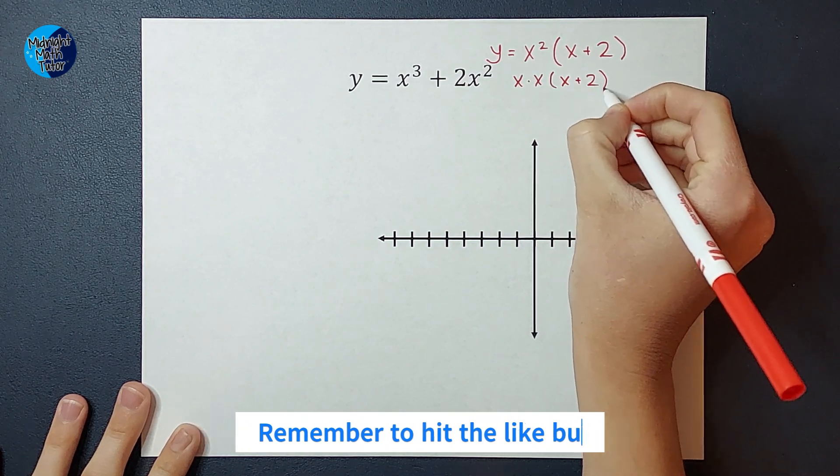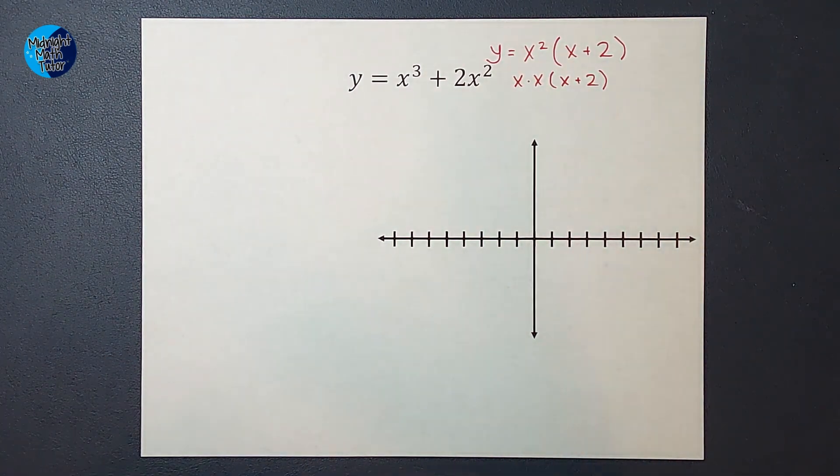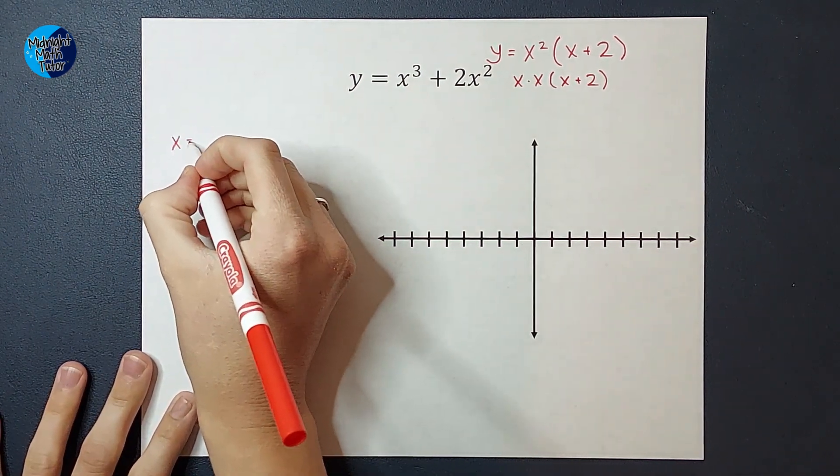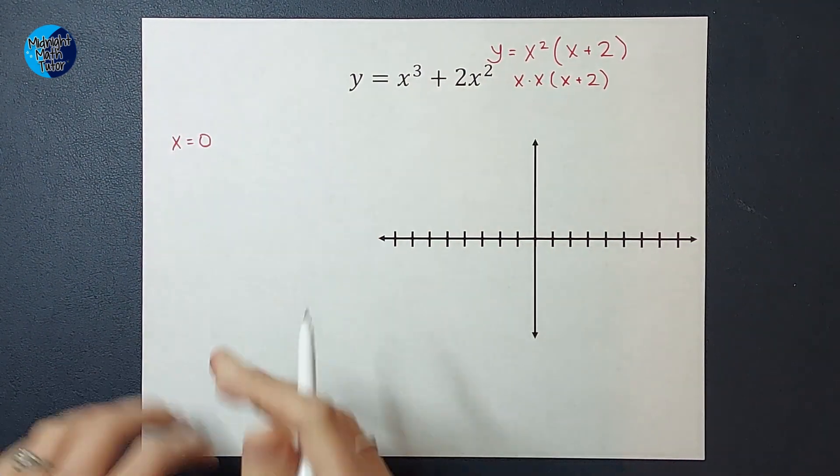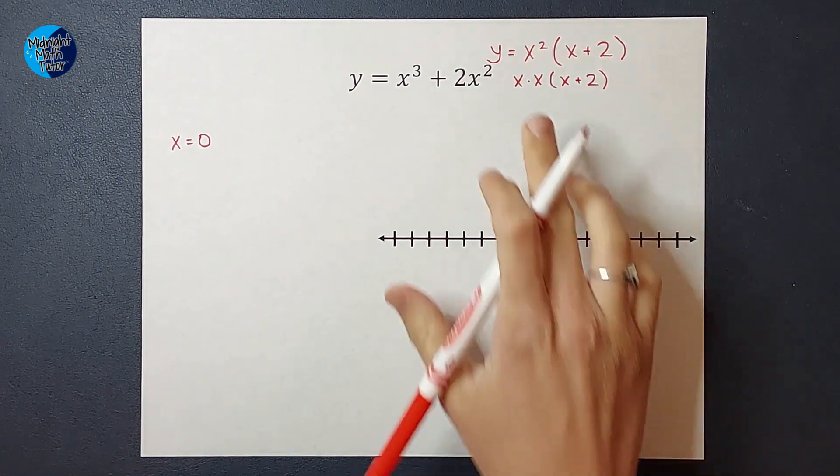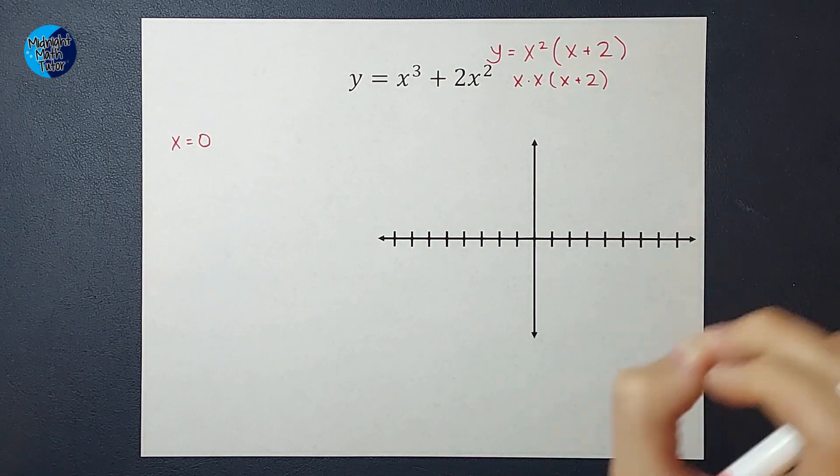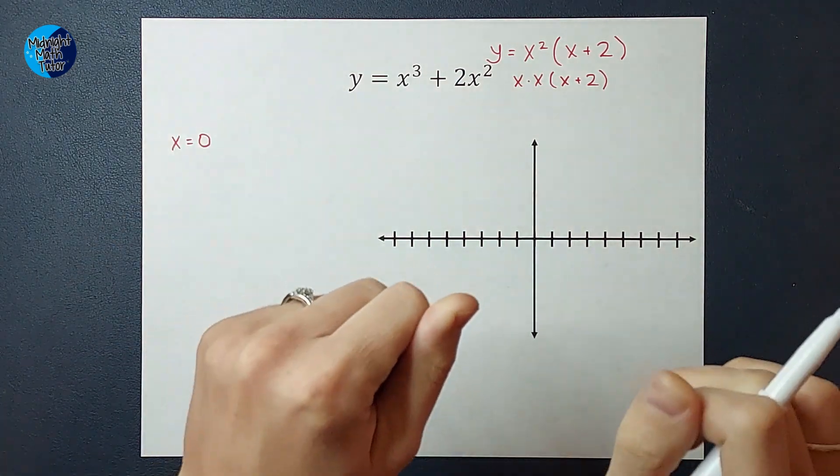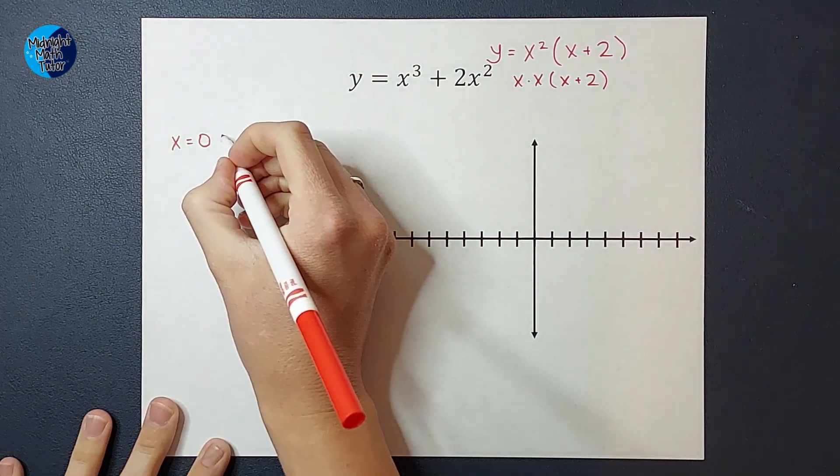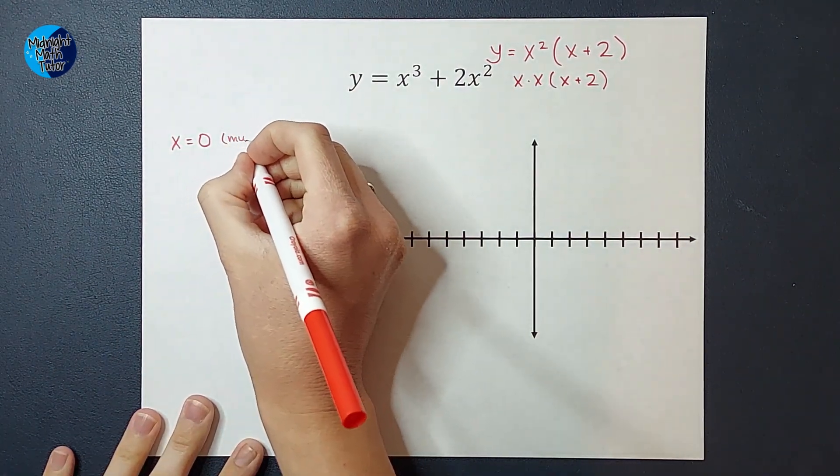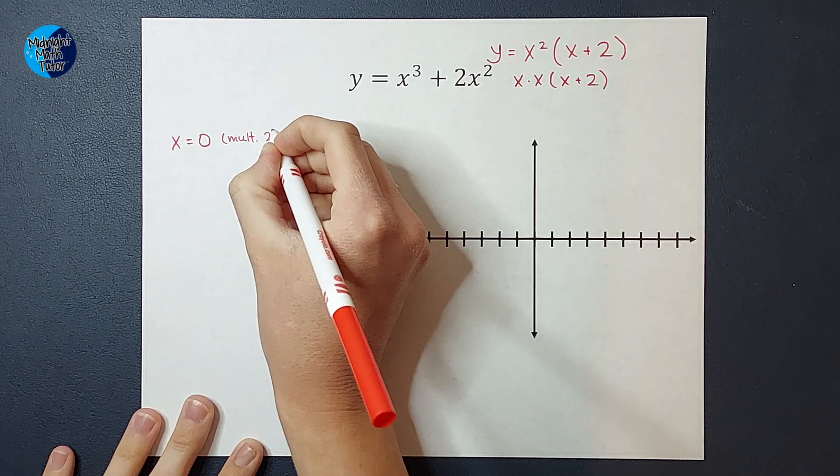I can think of this as x squared. I can also think of it as x times x times x plus two. That's how we're going to think of it at the moment. I'm going to set each of these equal to zero. I'm going to set x equal to zero, which is just x equals zero, and I'm going to make a note, this is part of step three, that there were two of these x's, which means we had a multiplicity of two.